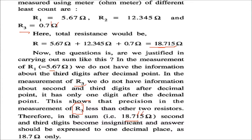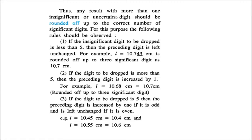Only the least precise measurement determines the result. We have to convert 18.715 to match the least precise value. R3 has only one decimal place, so we can express the result only as one decimal value: 18.7 (rounding 18.715 appropriately). Any result with more than one uncertain digit needs to be rounded off to the correct number of significant digits.